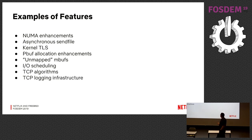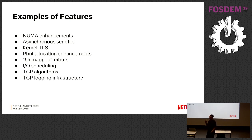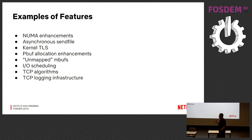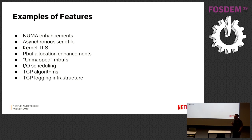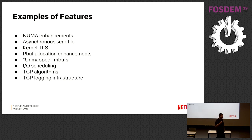PBUF allocation enhancements and unmapped MBUFs are both ways we gained efficiency by taking bottlenecks out of the system. PBUFs are physical buffers that store data coming off the disk. There was contention for a lock making performance very bottlenecked, so we rewrote that to get more parallelism during PBUF allocation. Unmapped MBUFs: someone on my team found a way that we could take the same amount of data and instead of representing it in something like 64 network buffers, represent it in one network buffer.